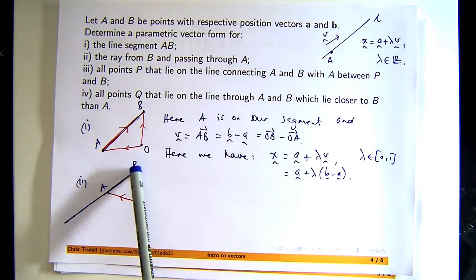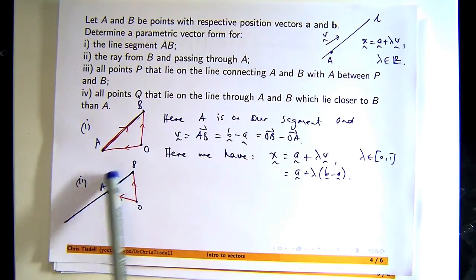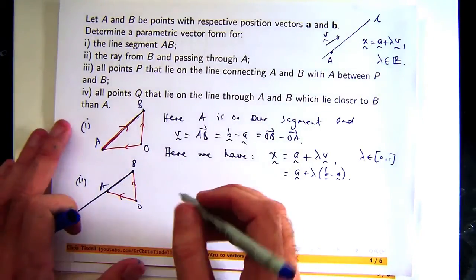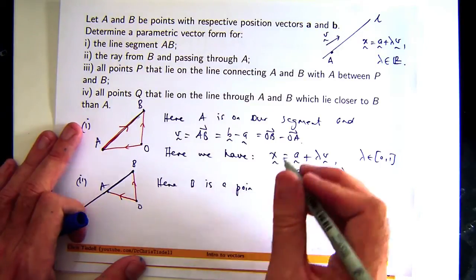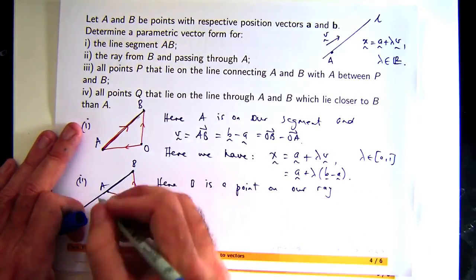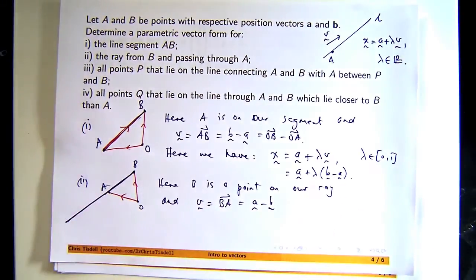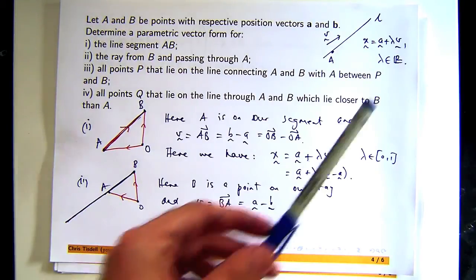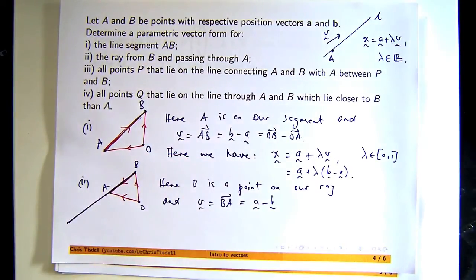So how do I parametrize it? Well, let's start with B as our starting point. And as lambda increases, we'll sweep out the whole part of the ray. So let's say B is a point on our ray, and let's just take BA as the vector that's parallel. Let's use our form again that we had up here. And what do we want? If we're using this vector here, what do we want to get our lambda to be between?